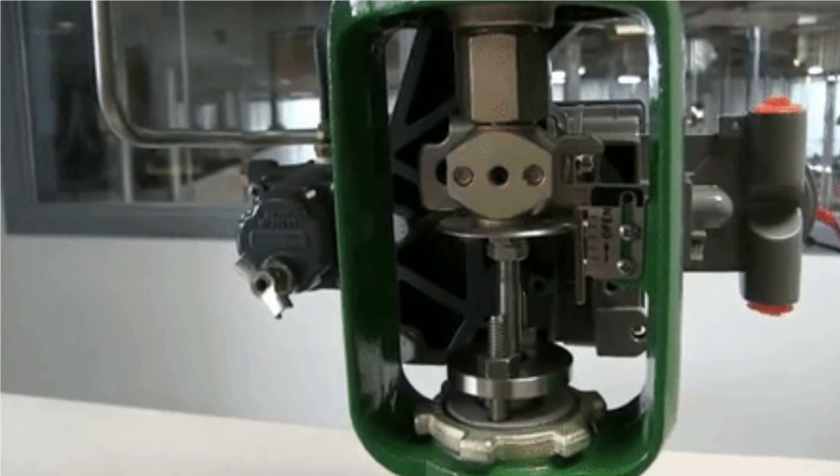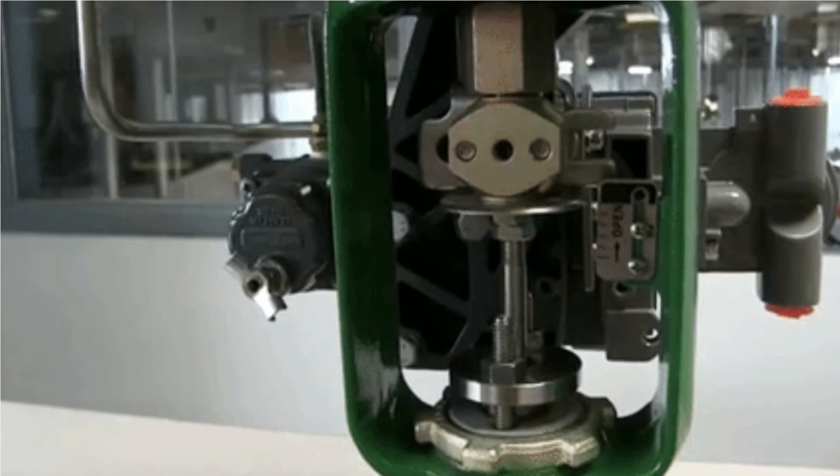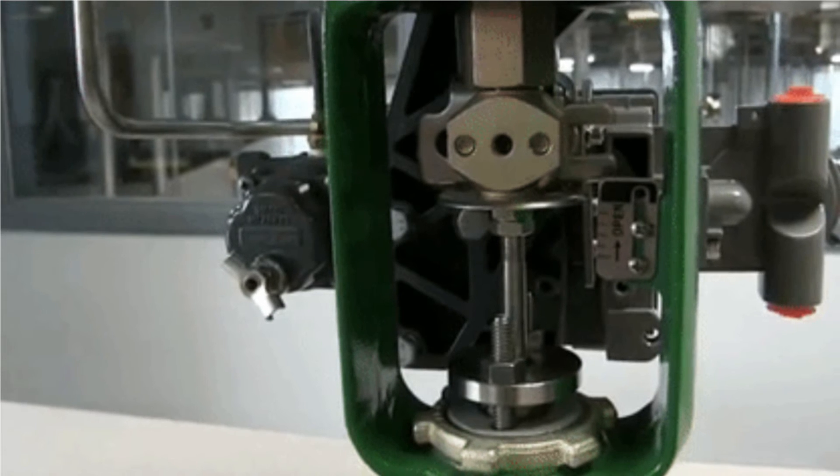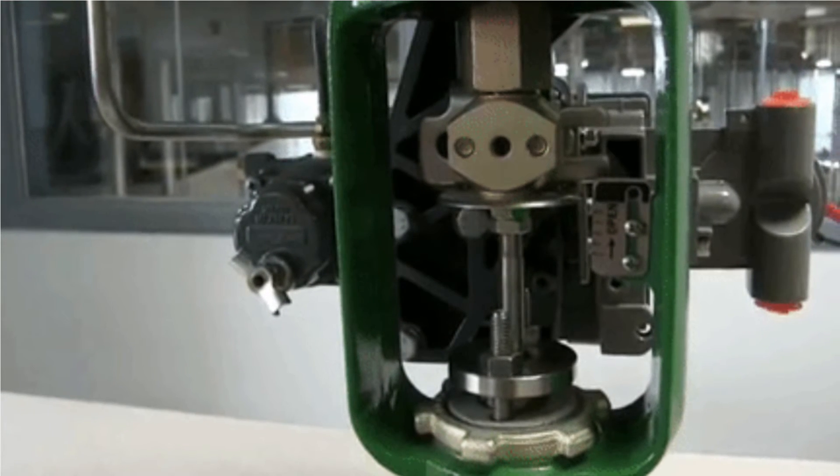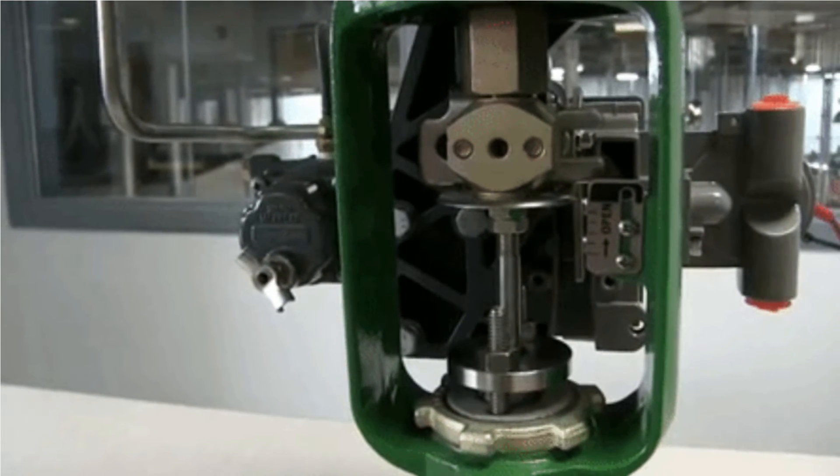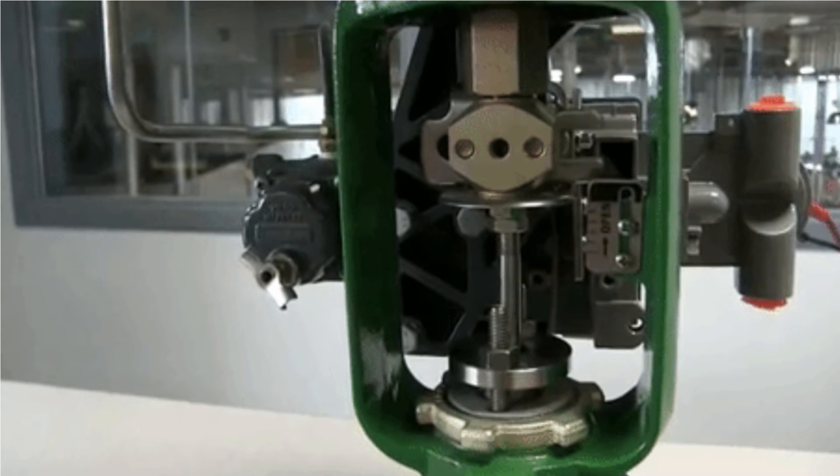Proper stem positioning is achieved by using a positioner. Based on the control signal, the positioner will operate. So if there is no positioner in the control valve, then we won't be able to position the stem.